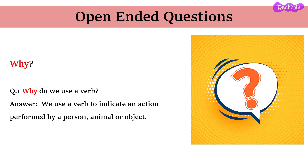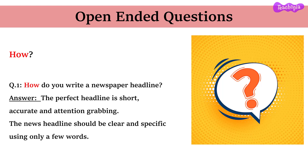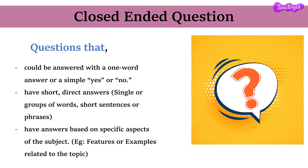Using why: Why do we use a verb? We use a verb to indicate an action performed by a person, animal or object. Using how: How do you write a newspaper headline? The perfect headline is short, accurate and attention-grabbing; the news headline should be clear and specific using only a few words. Closed-ended questions are those that can be answered with a one-word answer or a simple yes or no. They have short and direct answers like single or groups of words, short sentences or phrases. These can also have answers based on specific aspects of the subject, for example features or examples related to a topic.